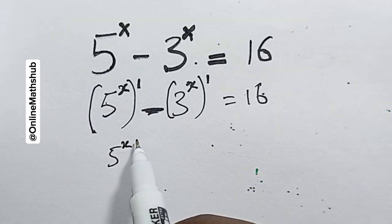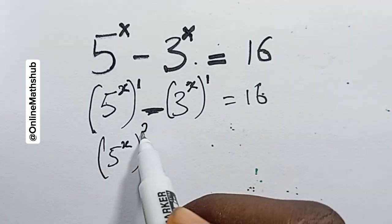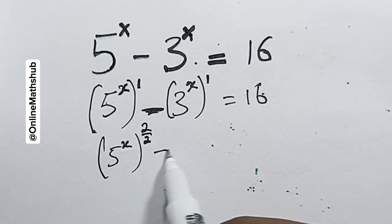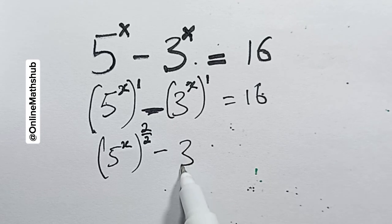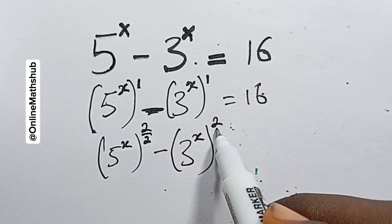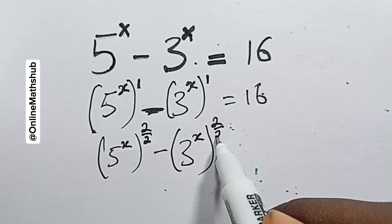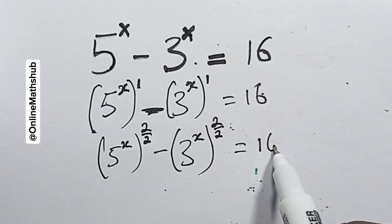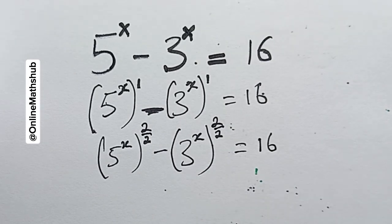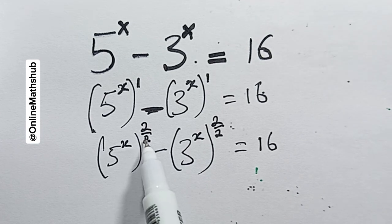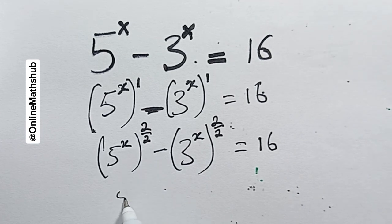I'm going to rewrite this as 2 divided by 2 — and 3x I will also write as 2 divided by 2, which is still the same as 1. This whole thing is equal to 16.